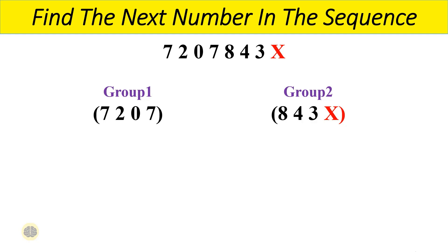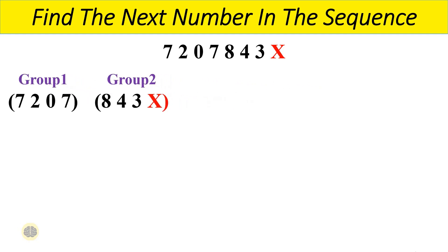Consider the first digit of the first group and add 1 to it, which will result in 8, which is the first digit in the second group. Here, the first digit of the first group is 7, after adding 1 to it the result will be 8, which is the first digit in the second group.